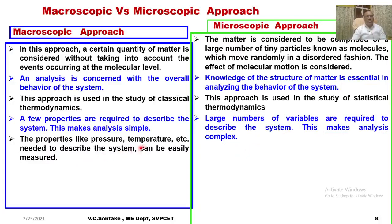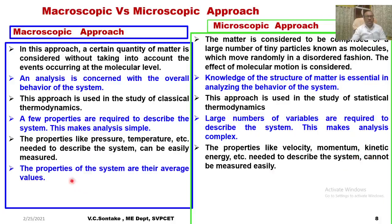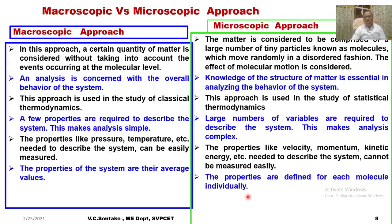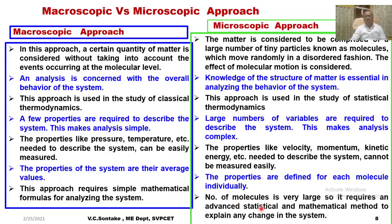Properties like pressure, temperature, etc., needed to describe the system in the macroscopic approach can be easily measured with simple instruments. Whereas in the microscopic approach, properties like velocity, momentum, and kinetic energy needed to describe the system cannot be measured easily. In the macroscopic approach, the properties of the system are average values. In the microscopic approach, properties are defined for each molecule individually. The macroscopic approach requires simple mathematical formulae for analysing the system, whereas the microscopic approach, having a large number of molecules, requires advanced statistical and mathematical methods to explain any change in the system.